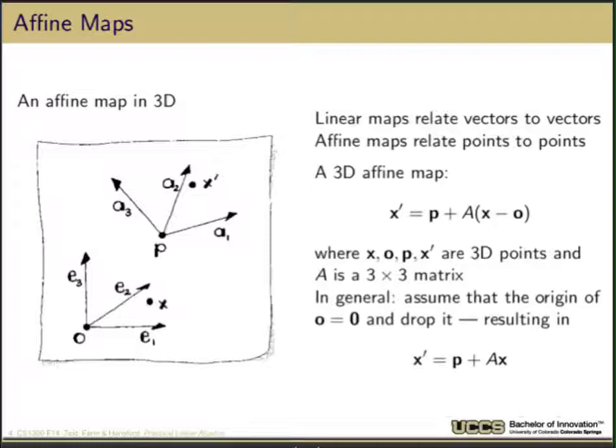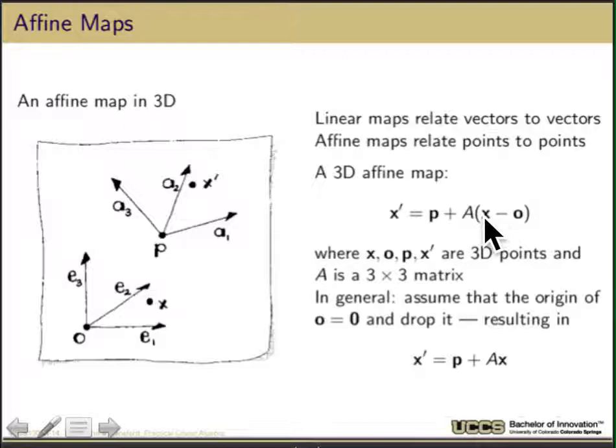Similar to 2D, we're going to take our affine maps in 3D. We're going to have a basis vector e1, e2, e3, and map to some new space a1, a2, a3. A 3D affine map is similar: we have some point P plus a matrix A times x minus O. O allows us to move x to some new place, rotate it, or transform it using the affine matrix A, and then put it back to some new location. If you assume the origin is zero, we can write the affine transformation as P plus Ax.